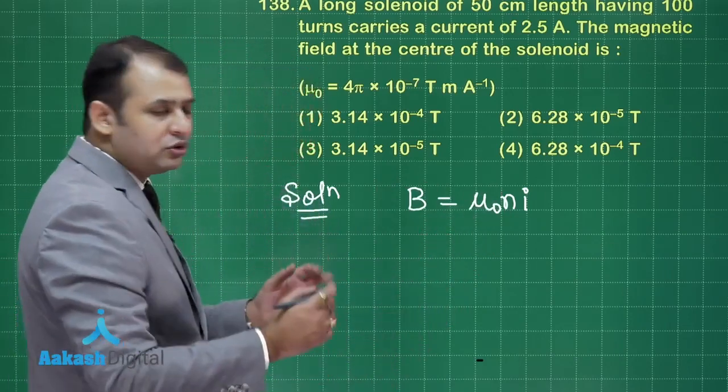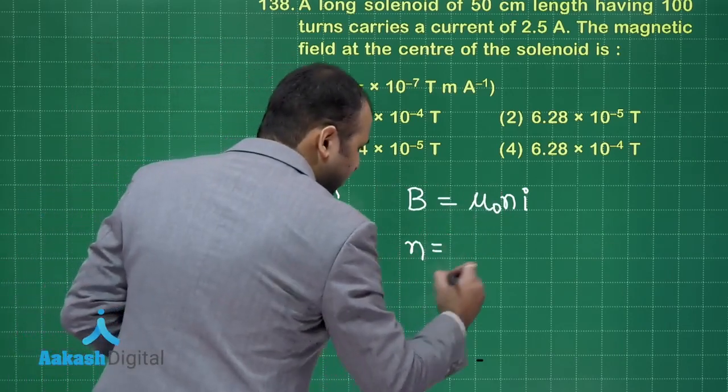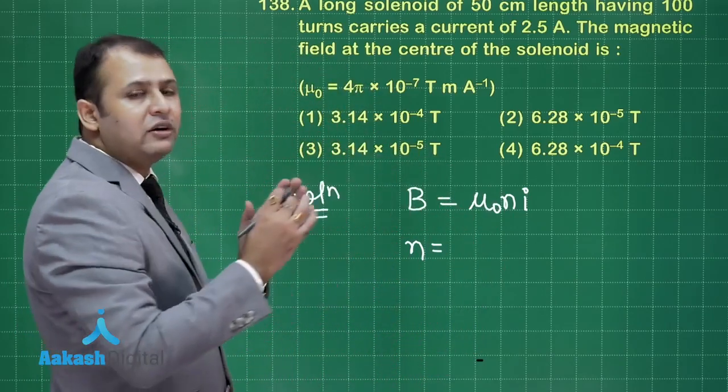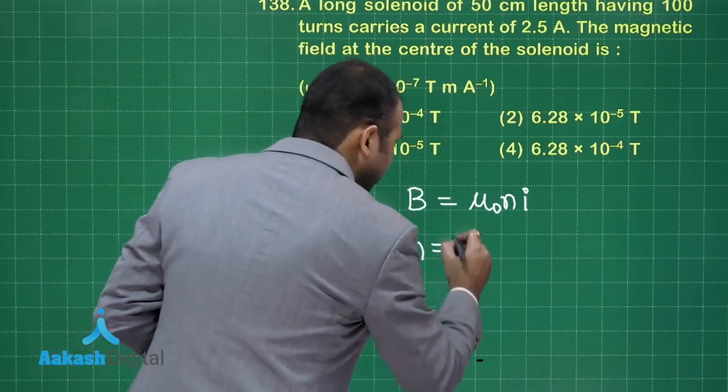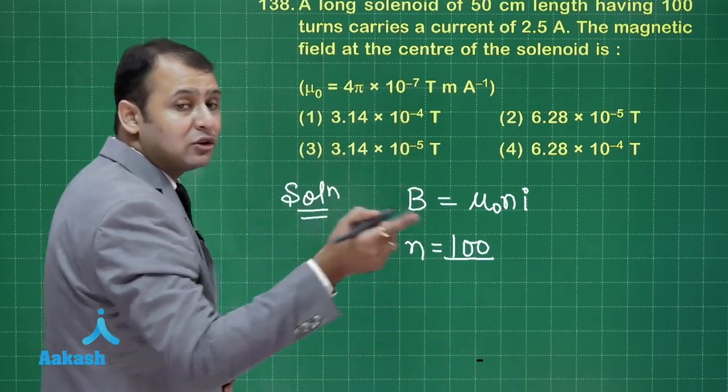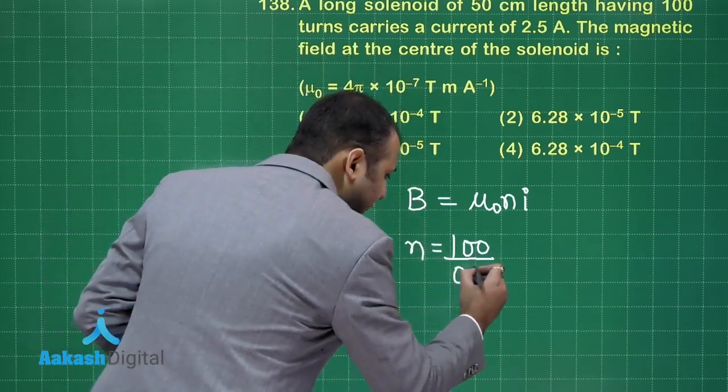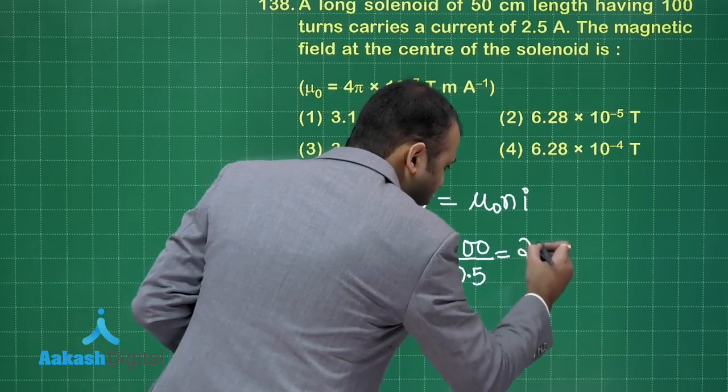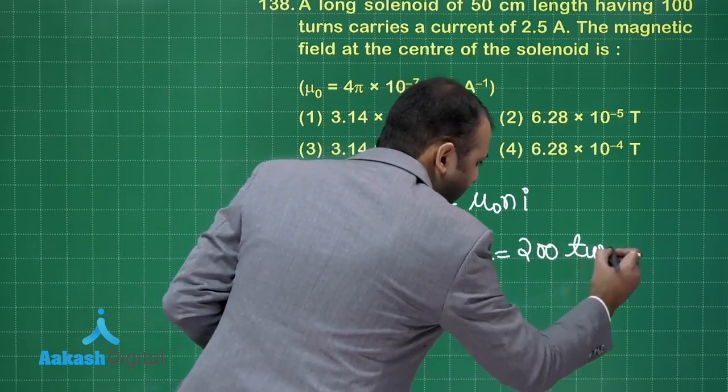So mu naught ki value, we know it is constant. When we talk small N ki baat karti hai, it will be total number of turns divided by length. Total number of turns is given as 100 and length of the coil is 50 centimeter. So we have to mention it as 0.5. That is equals to 200 turns per meter.